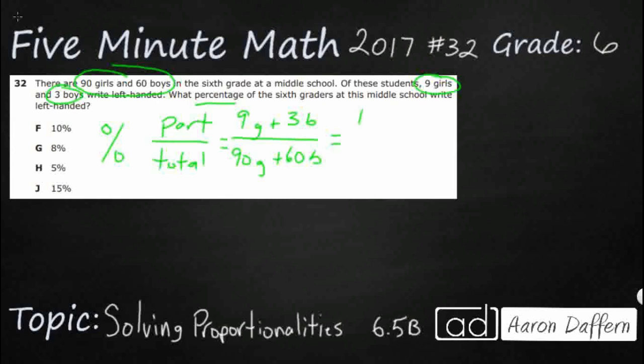So 9 and 3 is going to make 12. 90 and 60, that's going to make 150. So 12 out of the 150 students are left-handed. So we need to turn this into a percent. Well there are two steps in order to turn a fraction into a percent.